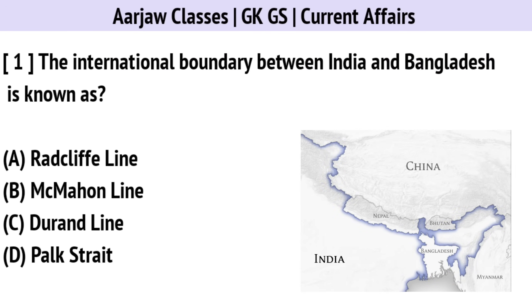First question: the international boundary between India and Bangladesh is known as? Correct option is A — Radcliffe Line.